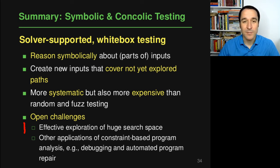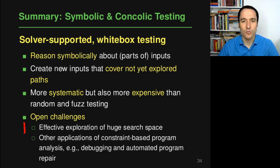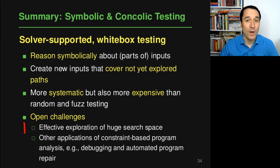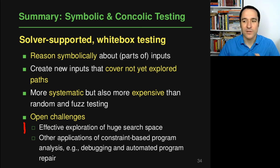There are also many other interesting applications of this constraint-based reasoning about programs — for example, in debugging or automated program repair, where people use these ideas of symbolic and concolic testing to find out why a program is buggy or even how to fix it so that the bug goes away.